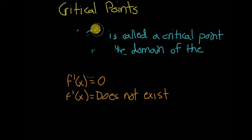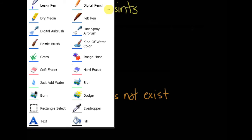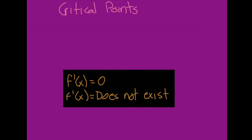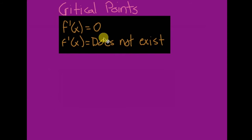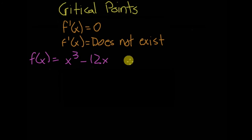Let's talk about one example and I'll show you how that works. So let's say we have f(x) is equal to x to the power of 3 minus 12x plus 5.